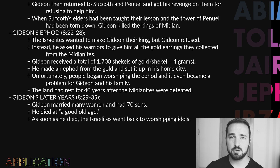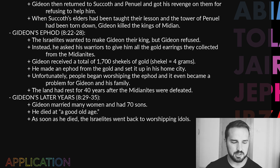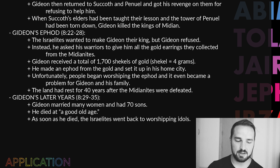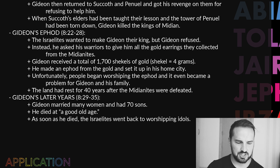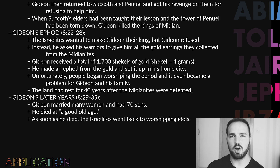The Israelites after this battle wanted to make Gideon their king, but he said no — he was not going to be their king. Instead, he asked all of his warriors to give him the earrings from the spoils of the Midianite army. The men agreed, and in total Gideon received 1,700 shekels of gold — a shekel is approximately four grams, so quite a lot. Gideon made a gold ephod out of this and put it in his home city. Unfortunately, people started to revere it and worship it, and the text tells us it even became a problem for Gideon and his household. We don't have many details, but it seems like it was definitely a mistake.